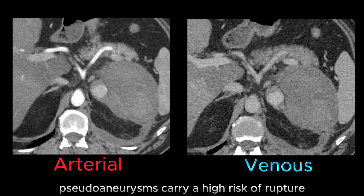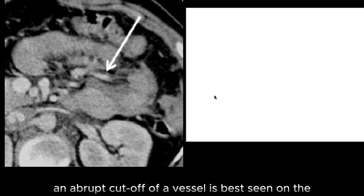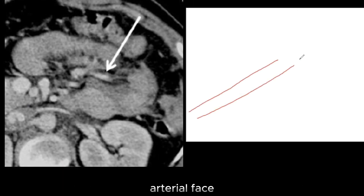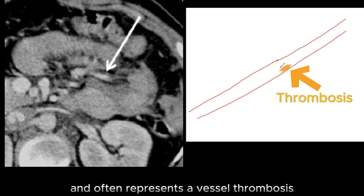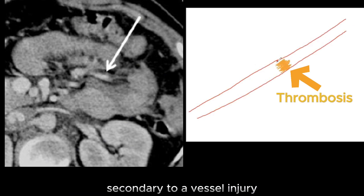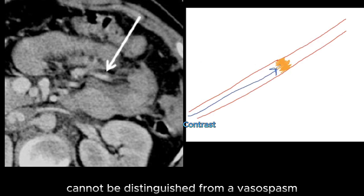Pseudoaneurysms carry a high risk of rupture and therefore need urgent attention. An abrupt cut-off of a vessel is best seen on the arterial phase. This sign can be very subtle and often represents vessel thrombosis secondary to a vessel injury. However, this sign cannot be distinguished from a vasospasm.